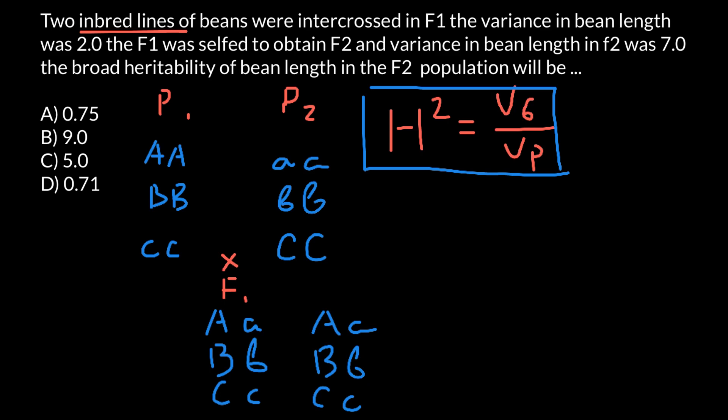What can we say about F1 generation? We already know that all plants are identical. But we also know, according to our problem, that in F1 generation the variance in bean length was 2. We still have a variance here — why? Because there is variance in the environment. That's why we have a variance of 2 here. So this variance can be attributed only to environmental variance.